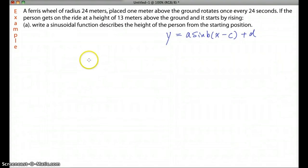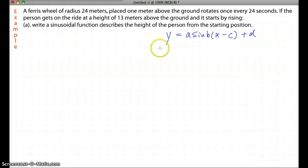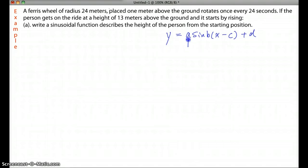So the height can be represented using the sine function as y, and x is the time. The time is related to the angle that the radius sweeps over. The radius determines how high the position can go, so the radius is actually A in the equation. So we get A right away — A must be the radius, which is 24.